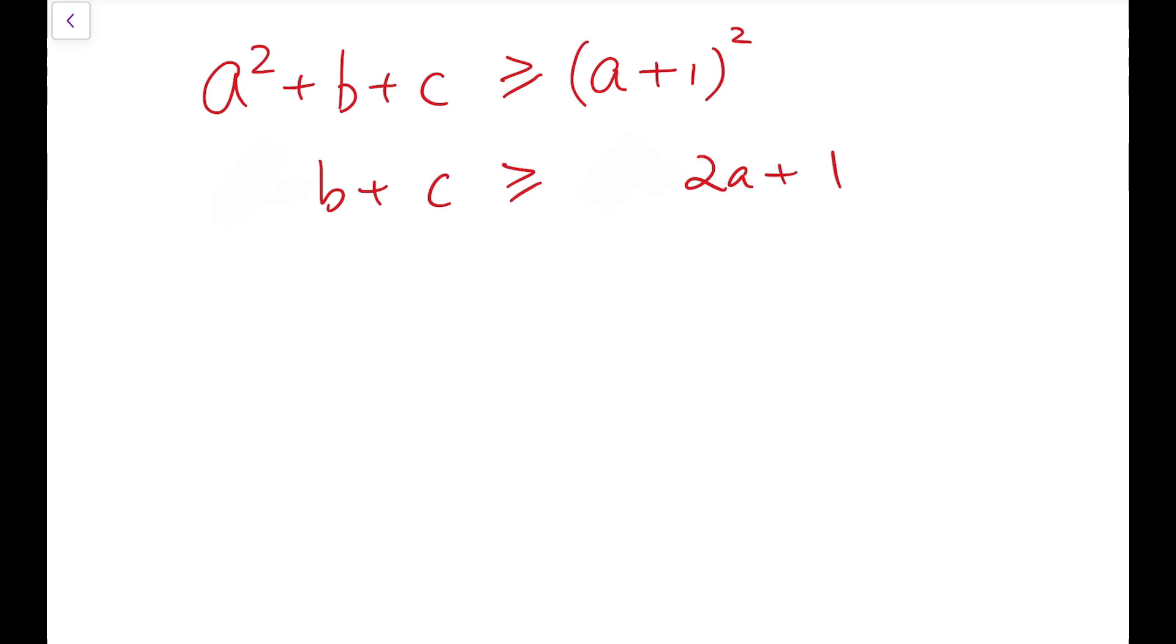Now, using a similar argument on the other two inequalities, we will have a plus c is greater than or equal to 2b plus 1, and a plus b to be greater than or equal to 2c plus 1, and we expect these three inequalities to hold all at the same time.